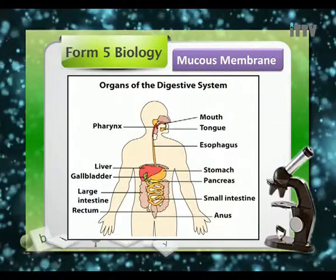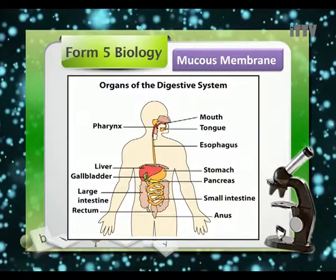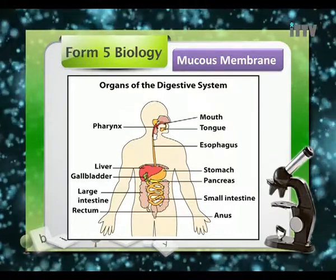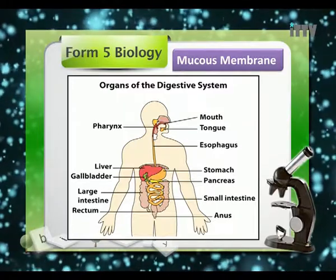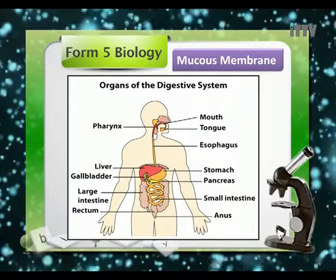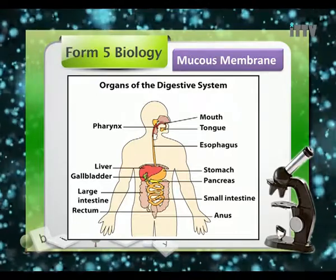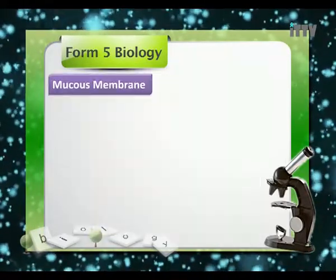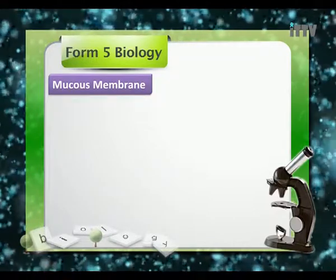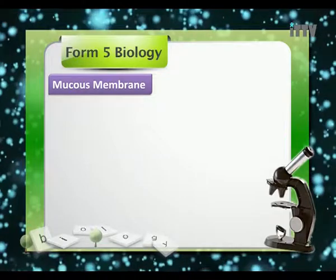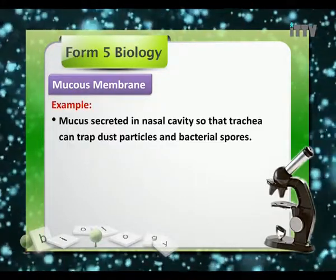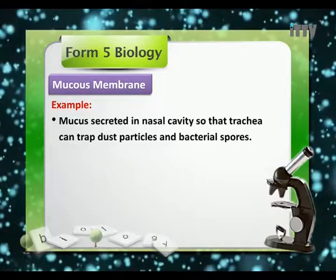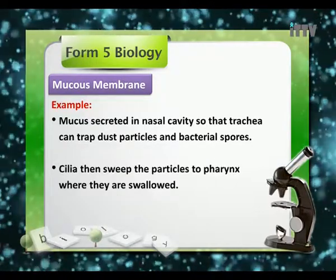Besides mucous membrane lining the respiratory and reproductive systems, we also have mucous membrane lining the digestive tract — from the mouth to the pharynx, esophagus, stomach, pancreas, small intestine, large intestine, rectum, and anus. Let's look at an example of how the mucous membrane plays its role in the first line of defense. Mucus secreted in the nasal cavity and trachea traps dust particles and bacterial spores. Cilia then sweep the particles to the pharynx where they are swallowed.